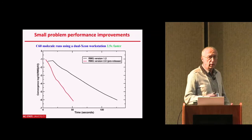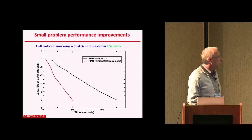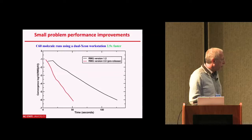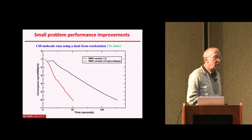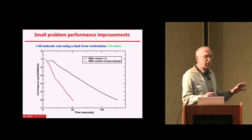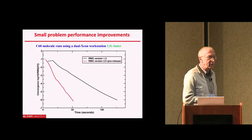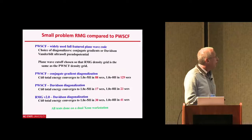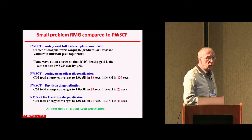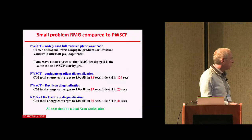Version 2 is 2.5 times faster on a desktop machine running C60. Those old enough may remember that at one point a C60 calculation was on the cover of Science, done using a Cray YMP supercomputer — now you can run it on your laptop. We compare to the well-known open-source plane-wave code PWSCF. It uses either conjugate gradients or Davidson methods: Davidson is faster on small to medium problem sizes but not always stable; conjugate gradients is always stable but slower.